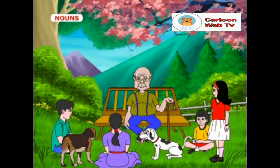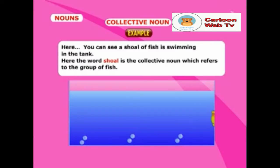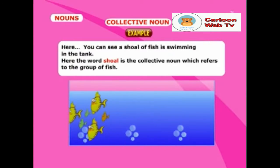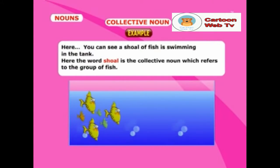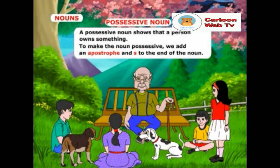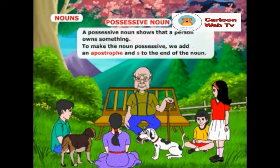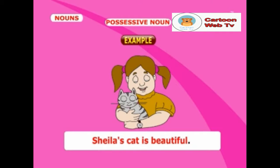Grandpa, what are collective nouns and possessive nouns? Please explain them with examples. Sure, my boy. A collective noun refers to a group of things, animals or persons. For example, here you can see a shoal of fish swimming in the tank. Here, the word shoal is the collective noun which refers to the group of fish. A possessive noun shows that a person owns something. To make the noun possessive, we add an apostrophe and S to the end of the noun. Example: 'Sheila's cat is beautiful.'